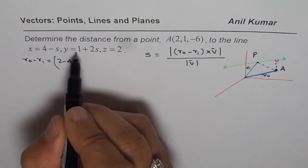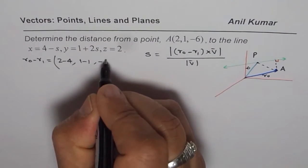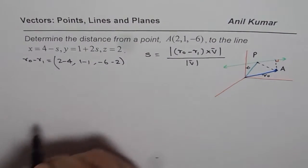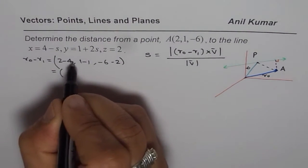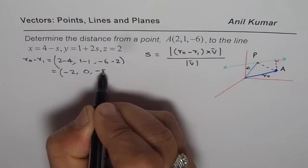X value is 4 here. So we'll write 2 minus 4 and then as far as the Y value is 1 minus 1. So we'll write 1 minus 1 and minus 6 minus 2, minus 2. This is R0 minus R1. Which you could write this as 2 minus 4 is minus 2, 0 and minus 8.